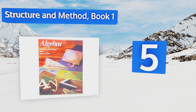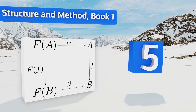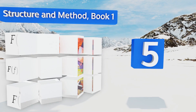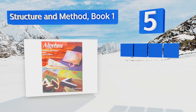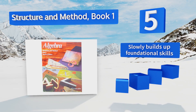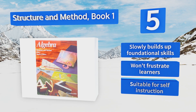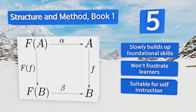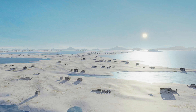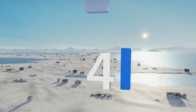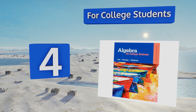Halfway up our list at number five, Structure and Method Book One may not have as many pictures or frills as some other options, but it might just have the best sequencing. The problems incrementally get harder as students work through the book, so they never feel overwhelmed. It slowly builds up foundational skills and won't frustrate learners. It's suitable for self-instruction.